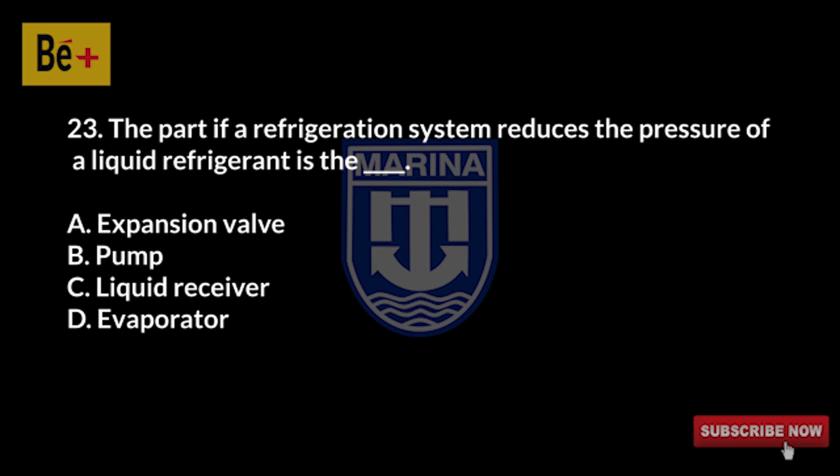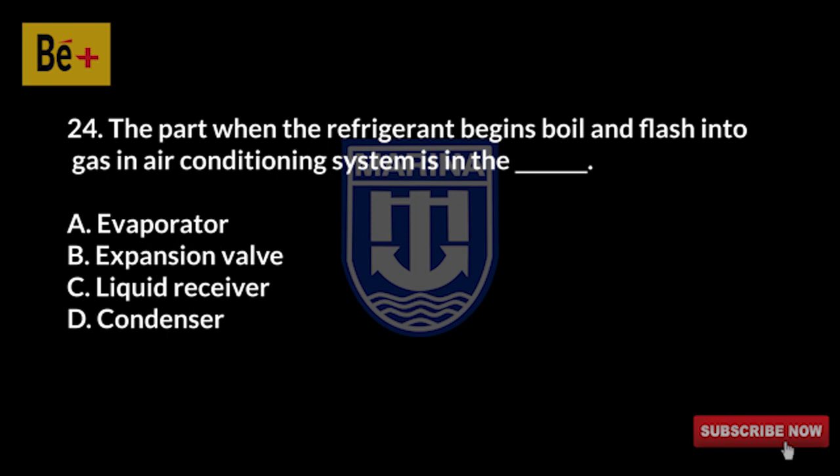The part of a refrigeration system that reduces the pressure of a liquid refrigerant is the: A) expansion valve, B) pump, C) liquid receiver, D) evaporator. The answer is A, expansion valve.